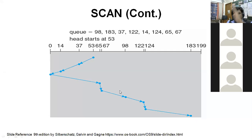And if you have right side, then after 53, 65, 67, 98, 122, 124, 183. And after 183, what do you do here? It gives you 37, 37 and then 14. So, in this way, LOOK algorithm works.